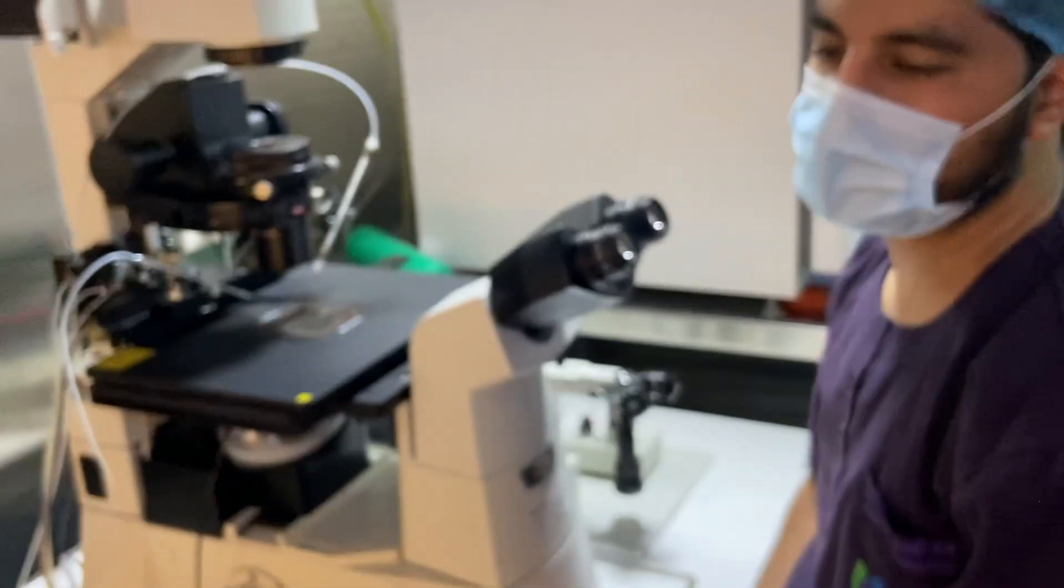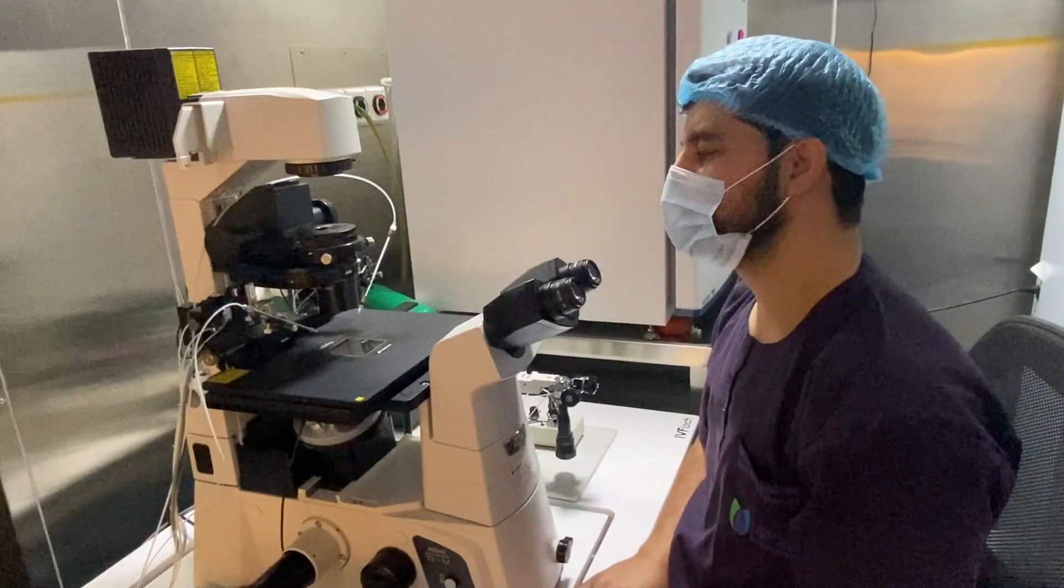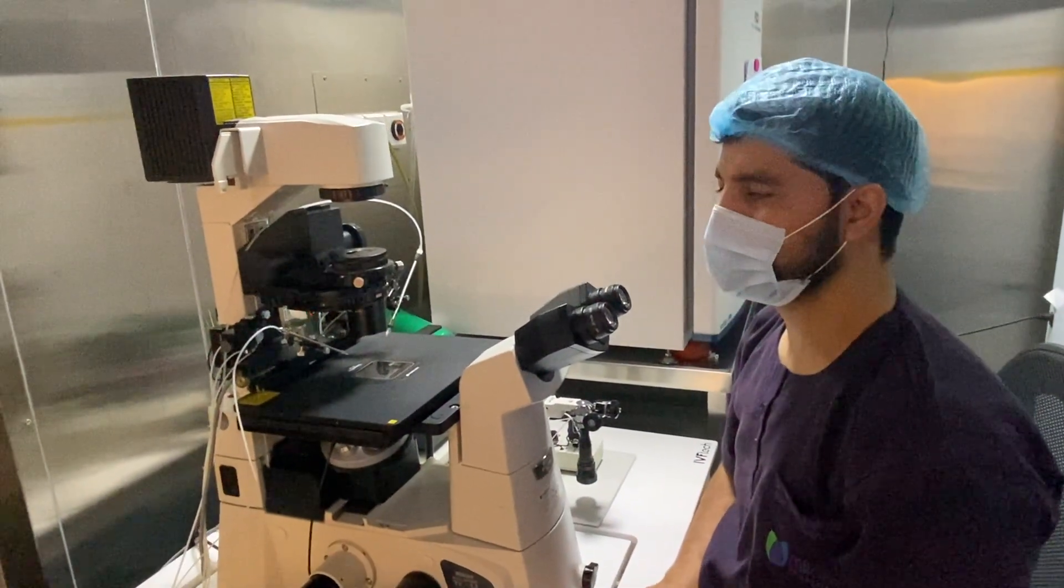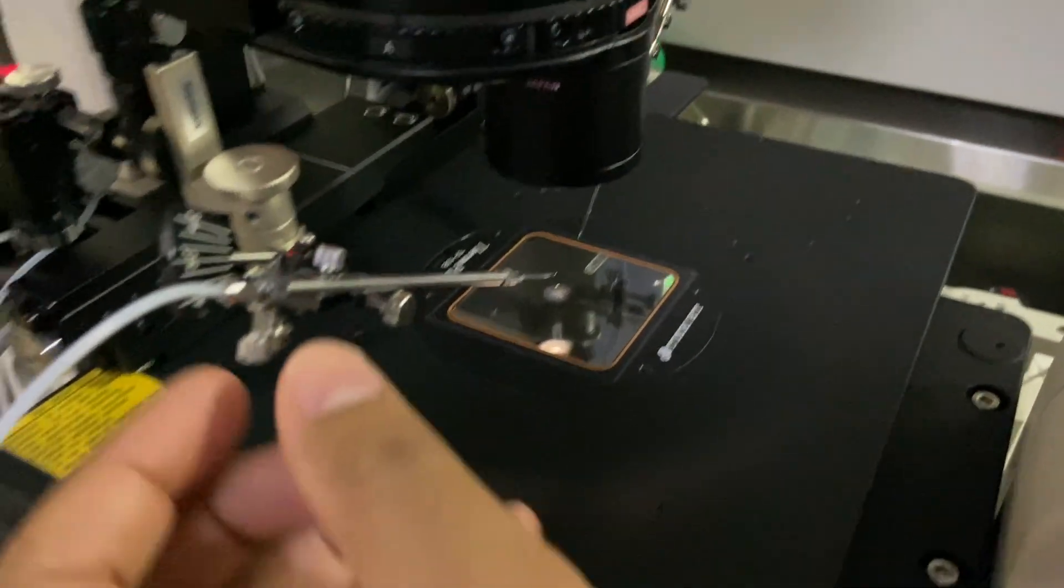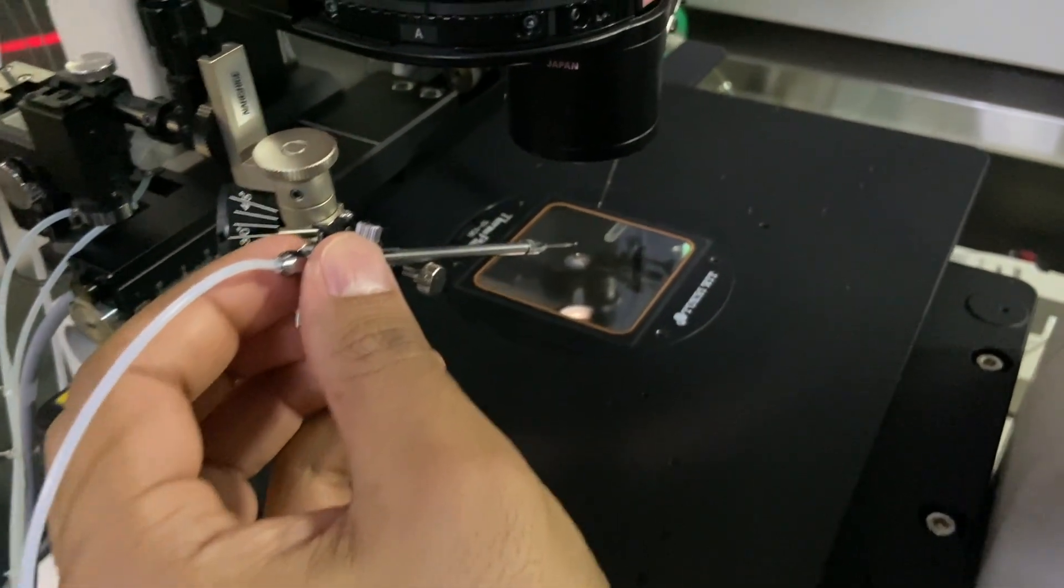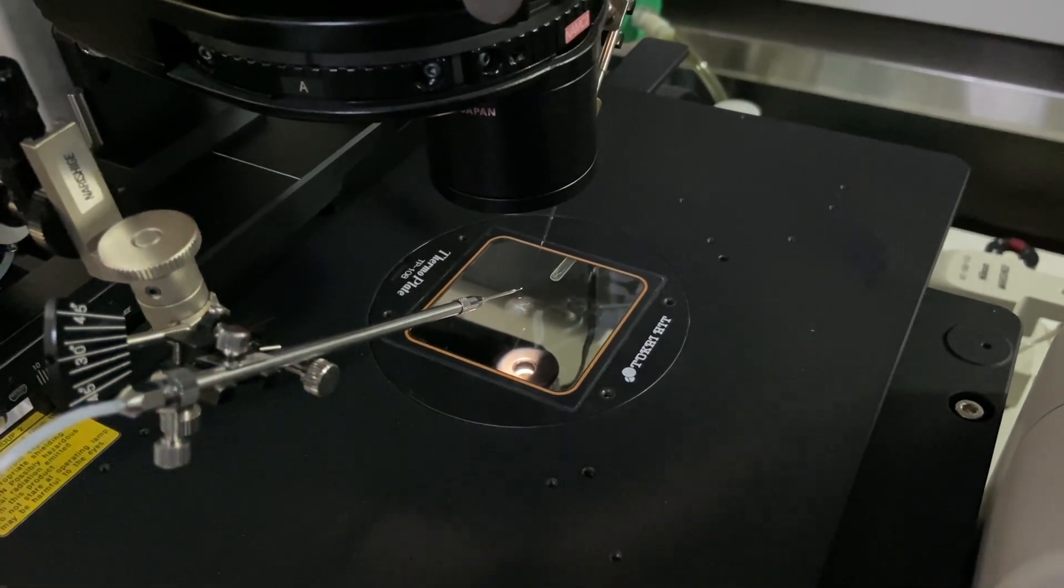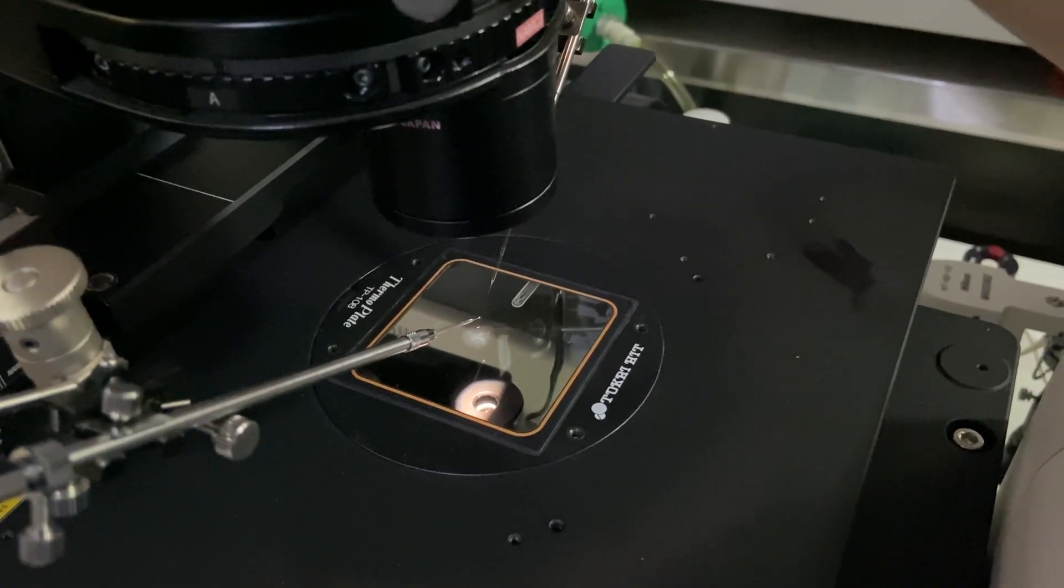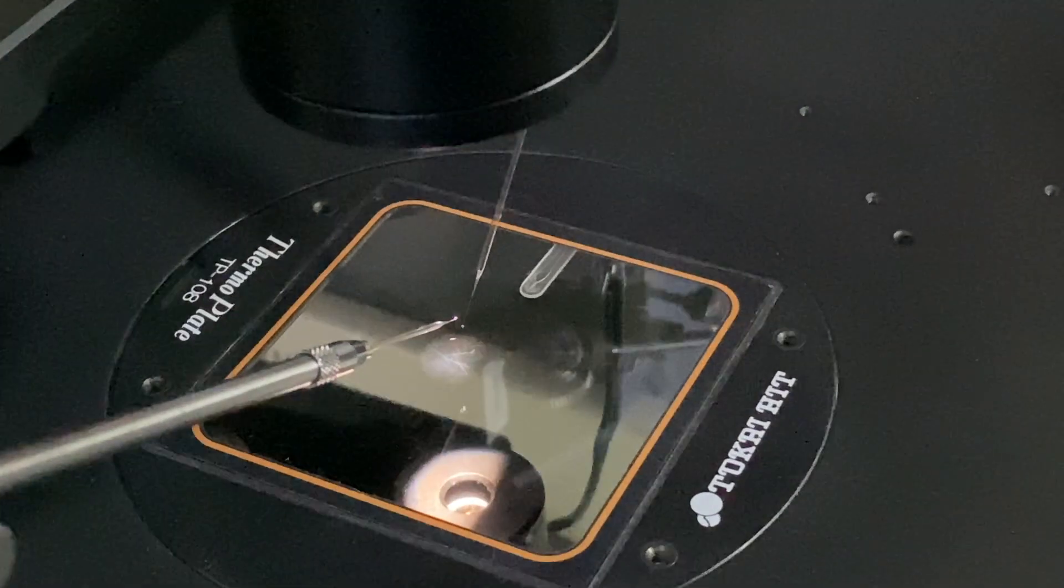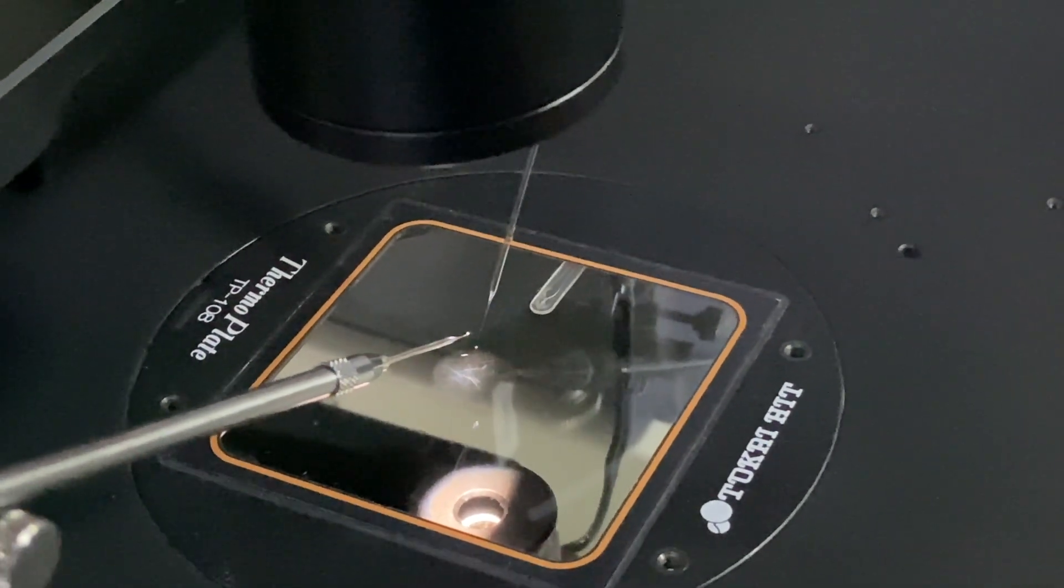The next thing will be to take the injecting and the holding needle and then use them properly. Thank you. So next thing is to bring these needles. This is holding needle towards the light. You can see the tip is shining. Similarly, this injecting needle also to bring it towards close to the light. You can now see the tip is shining.